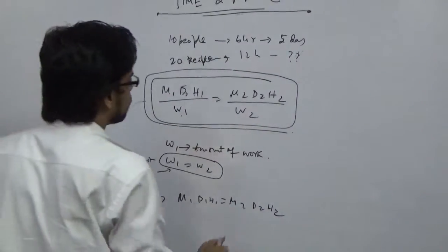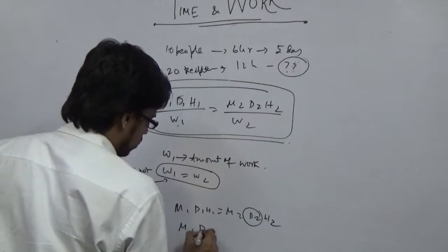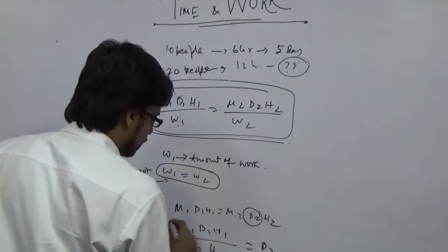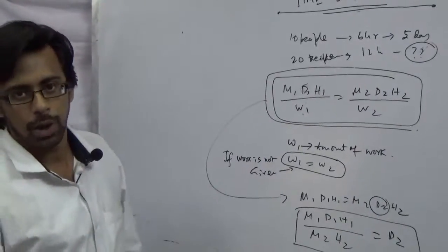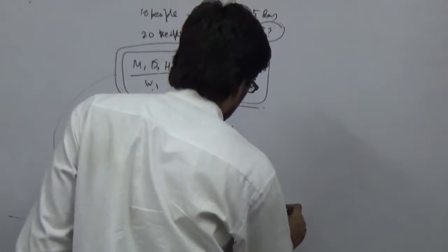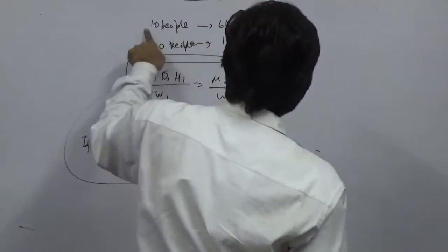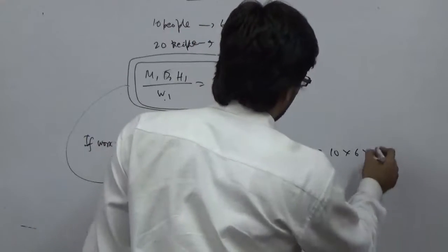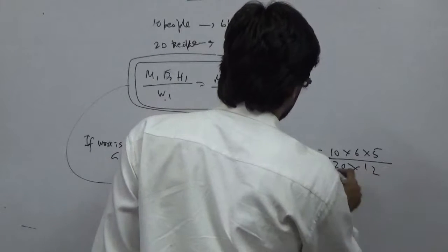So M1, D1, H1 and M2, D2, H2 — you have to find D2. If you remember D2, then M1, D1, H1 divided by M2, H2 equals D2. D2 is equal to: M1 is 5, H1 is 7, M2 is 20, and H2 is 12.